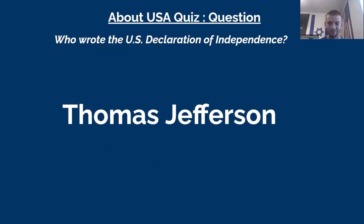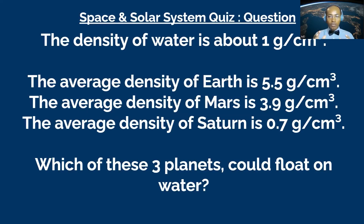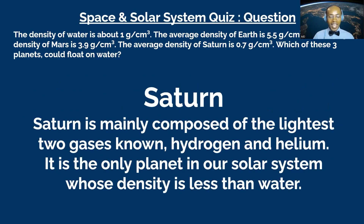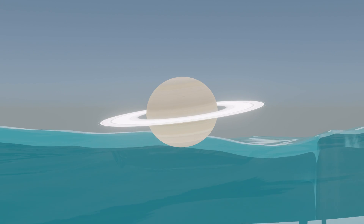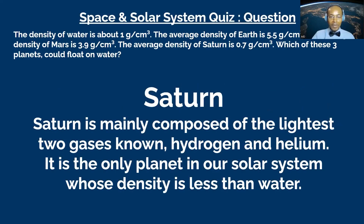Next question: the density of water is about one gram per cubic centimeter. The average density of Earth is 5.5, Mars is 3.9, and Saturn is 0.7 grams per cubic centimeter. Which of these three planets could float on water? The answer is Saturn — absolutely right! Saturn is mainly composed of hydrogen and helium, the two lightest gases, and is the only planet in our solar system whose density is less than water.